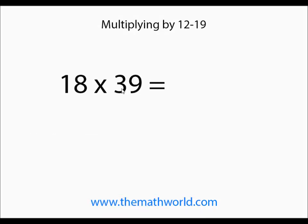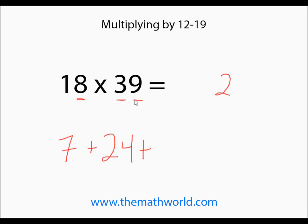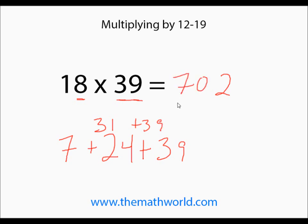Next example we're going to look at is 18 times 39. The first thing we do is 8 times 9 — that's 72, so we're going to write down 2 and put down 7 here. We're going to add that to the next number. 8 times 3 is 24. So 7 plus 24, and then we're going to add all those by 39. 7 plus 24 is 31, and 31 plus 39 is 70. So 18 times 39 is 702.